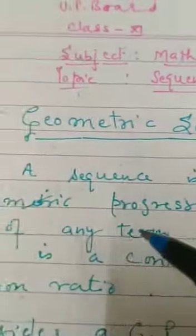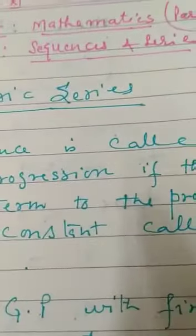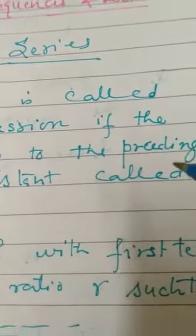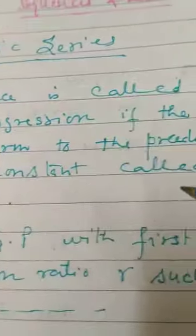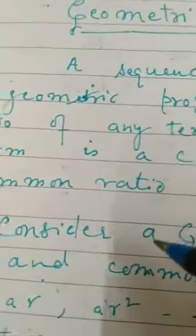A sequence is called a geometric progression if the ratio of any term to the preceding term is a constant, and this is called the common ratio.